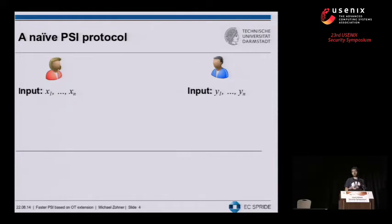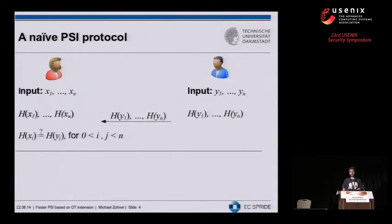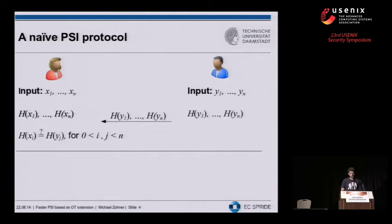If you're a developer wanting to tackle this problem, what would come to mind first is the following protocol. Alice holds inputs labeled X while Bob holds inputs labeled Y. Both parties hash their inputs. Then Bob sends his hashed inputs to Alice, who simply compares the hashes to get the result. Alice is the one who gets the output and can send it back to Bob if required. This protocol is actually deployed in practice and is really, really efficient — you only need one hash function evaluation per element, Bob only sends one hash per element, and you can pre-compute the solution.